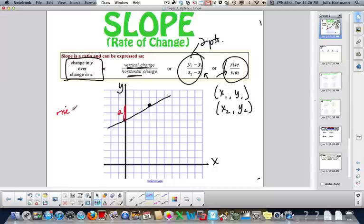So that's our rise over our run. One, two, three, over three. So two-thirds is our slope.